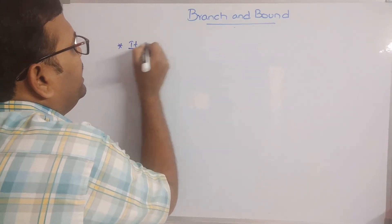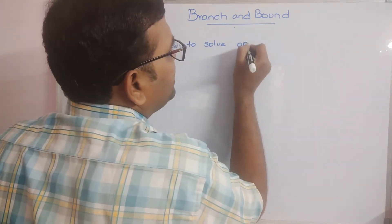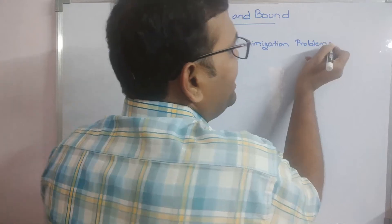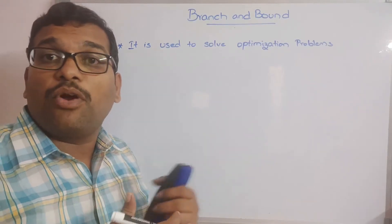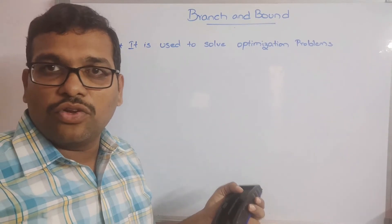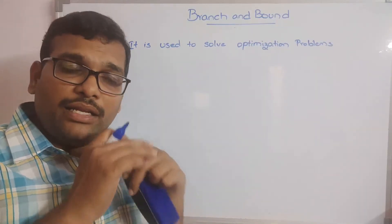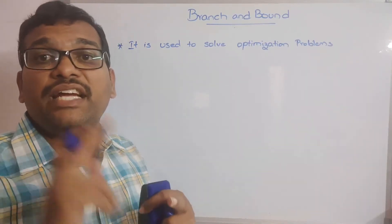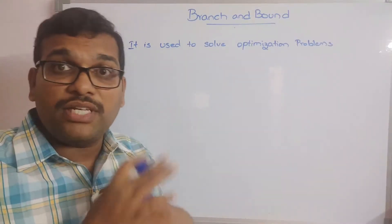Branch and Bound is mainly used to solve optimization problems. We have seen different categories of problems — decision problems and optimization problems. Decision problems are those that give all feasible solutions, and backtracking is mainly used to solve decision problems. Backtracking finds all feasible solutions using the state space tree.